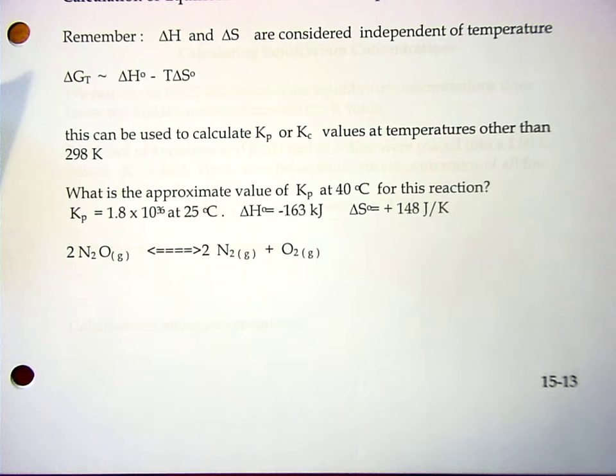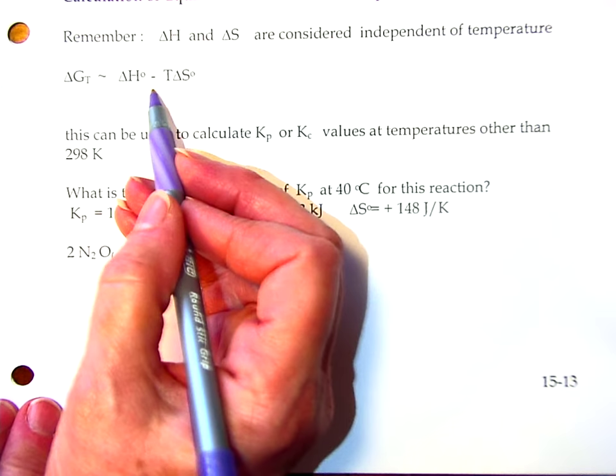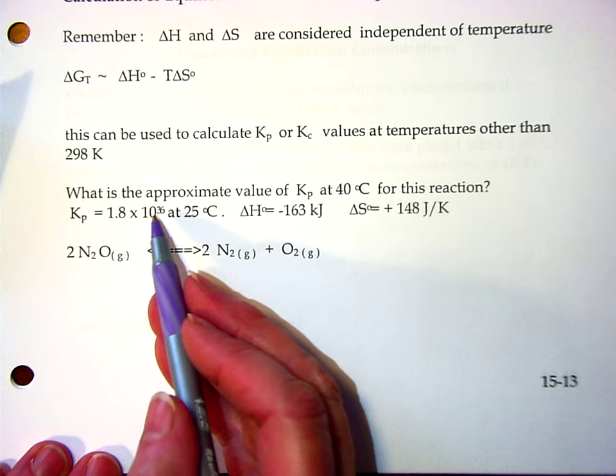Now let's look at calculation of equilibrium constants at temperatures that aren't standard conditions, or are not 25 degrees. Remember we said that if we have non-standard temperatures, we can use enthalpy delta H and entropy, because those are pretty much independent of temperature. So delta G at some temperature T is about equal to delta H0 minus T delta S0. So we can use this to calculate our thermodynamic equilibrium constant at temperatures other than 298 Kelvin.